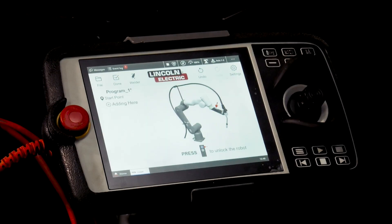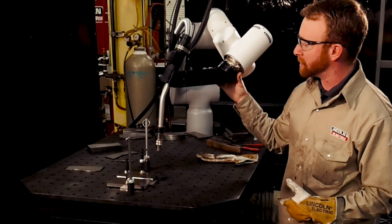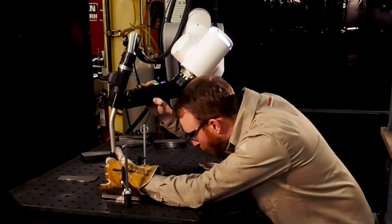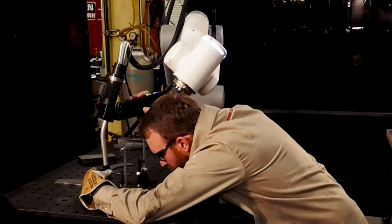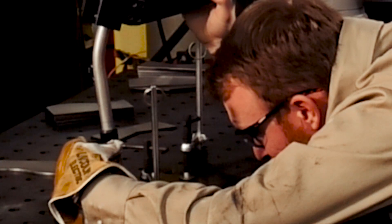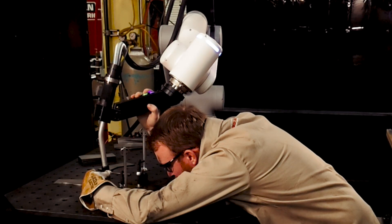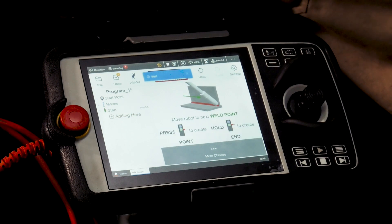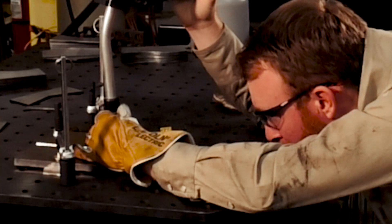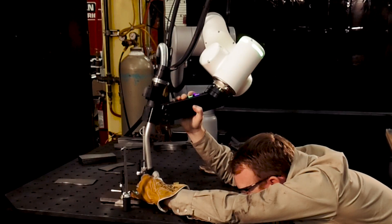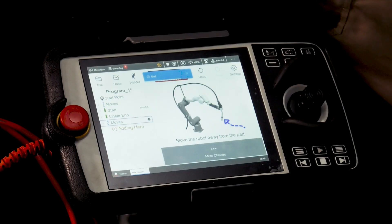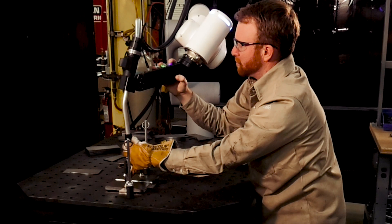We're going to start here. Press that little blue button to allow us to move the machine around. Go to our first weld. First point, we're going to press that green button. Then go to our end point. Hold that green button. Then we can just move it out of the way a little bit.